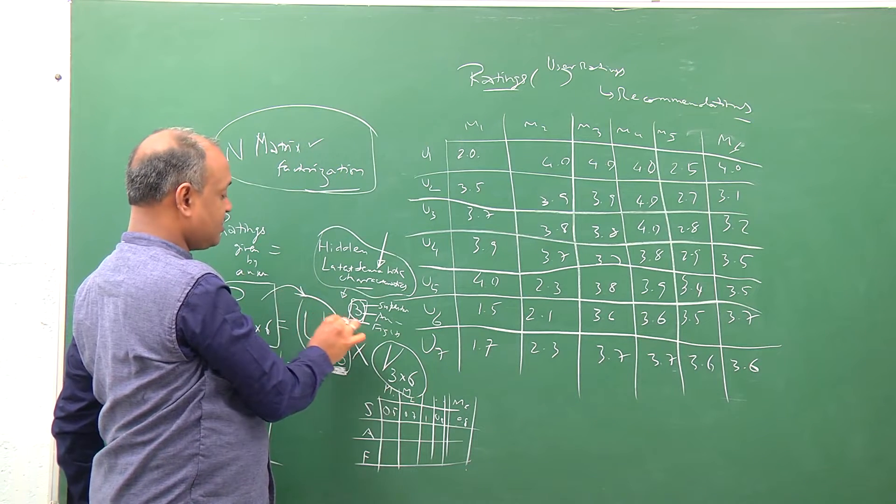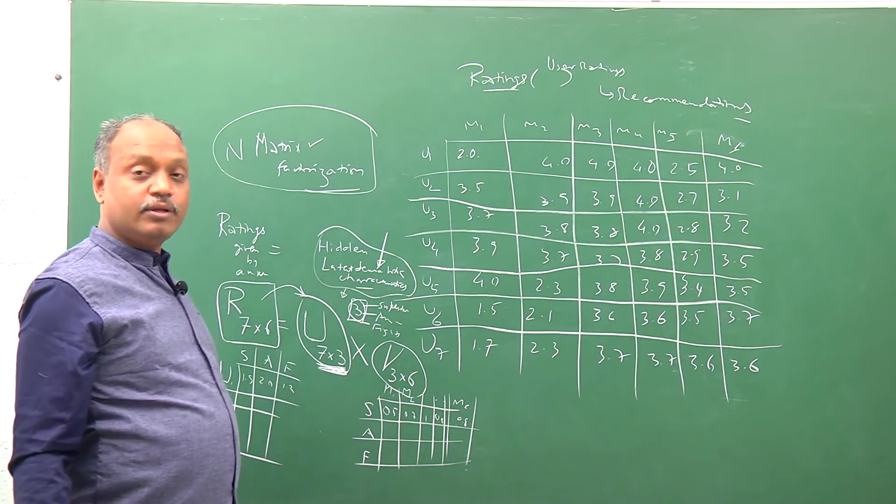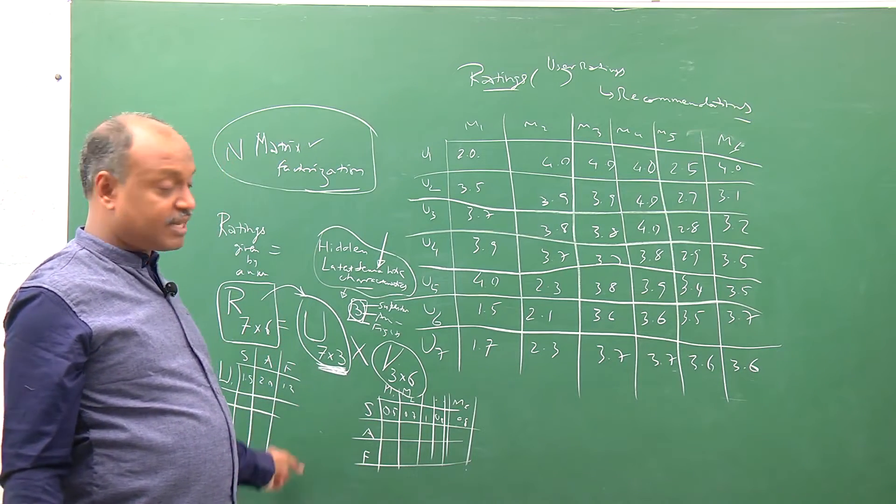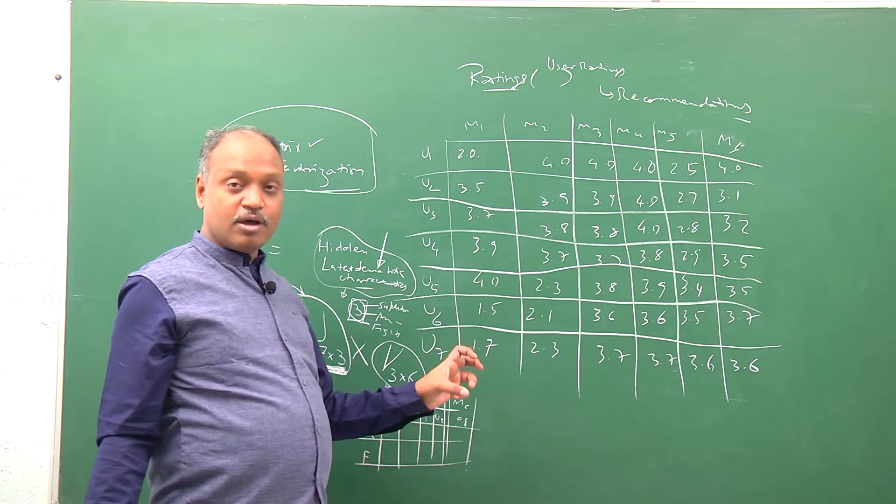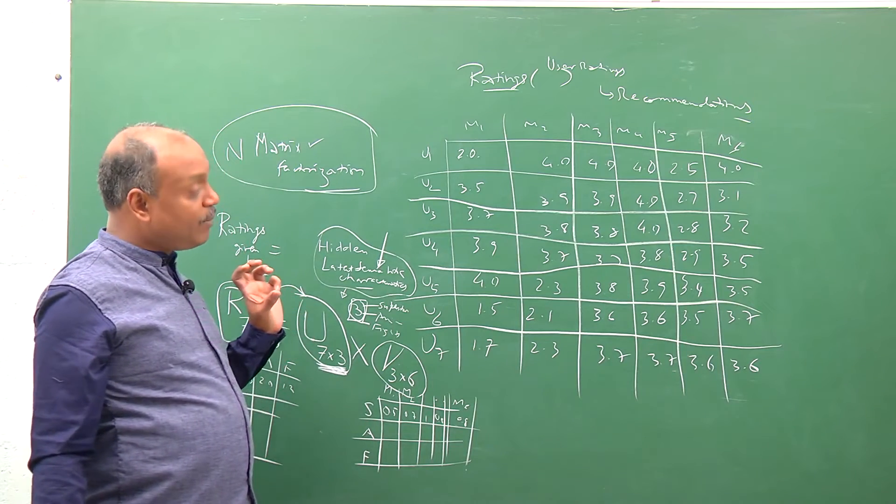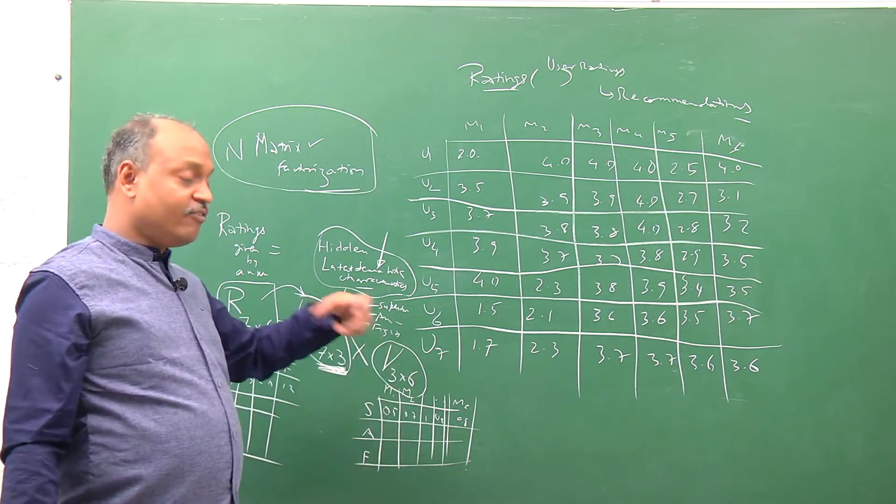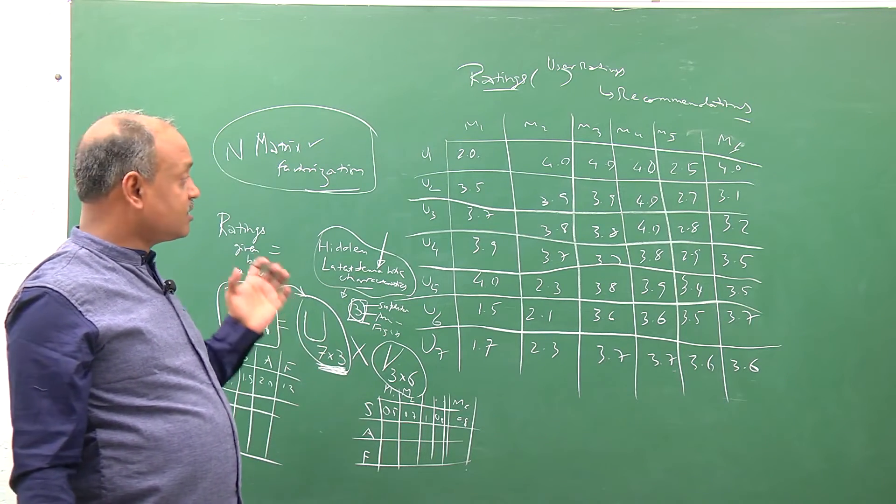The machine learning problem here becomes the problem of matrix factorization where the ratings matrix is factorized into two smaller matrices: one representing users to characteristics, and one representing characteristics to the movies. This is a very powerful technique which is used for identifying hidden factors in large ratings matrices.